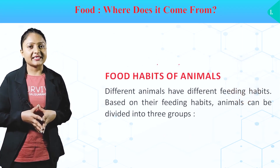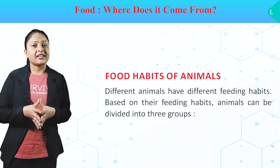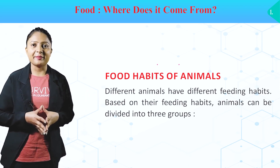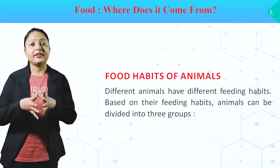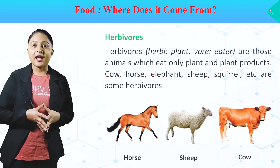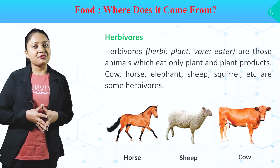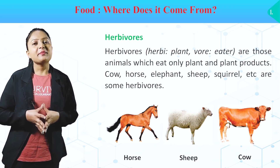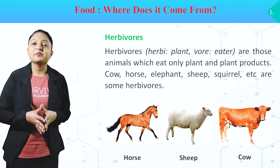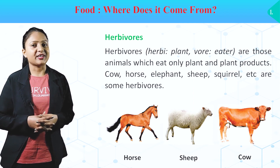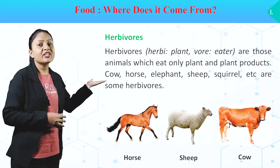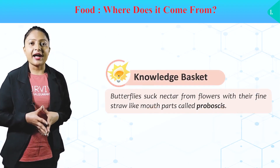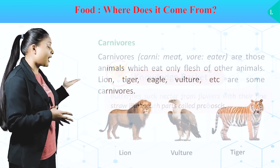Food habits of animals. Ab hum animal ki food habits ko dekhte hai. Different animals have different feeding habits. Based on their feeding habits, animals can be divided into three groups. Herbivorous — 'herby' means plant eater. These are animals which only eat plants and plant products. Cow, horse, elephant, sheep, squirrel, etc. are some herbivorous animals. These are pictures of horse, sheep and cow. Knowledge basket: butterflies suck nectar from flowers with their fine straw-like mouthparts called proboscis.